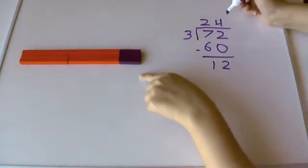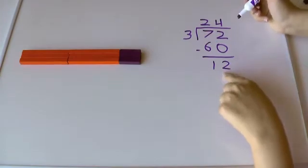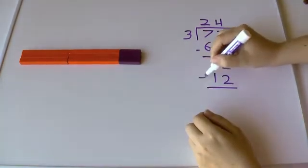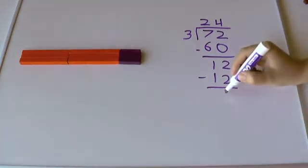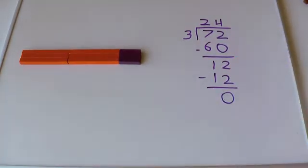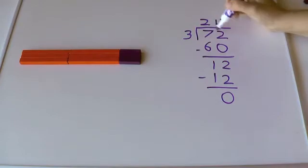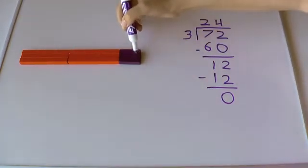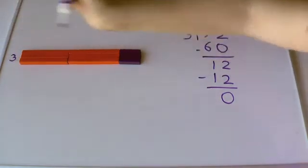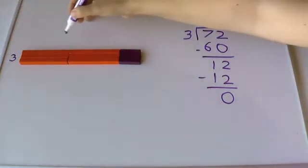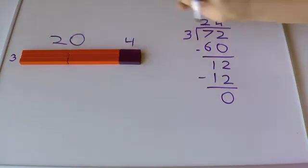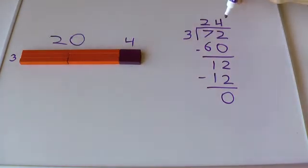And so what did we take away from the 12 we had left? We took away 12. And what do we have left down here? Nothing. Zero. Okay, so 72, this whole amount is still 72. And one side is 3. The other side is 20 and 4, which is 24.